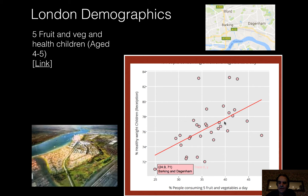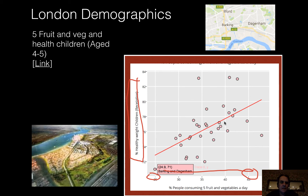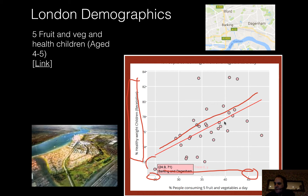If we look at fruit and vegetable consumption — with the fewest portions of five-a-day on one end and the most on the other — and then plot the healthy weight of kids as they enter primary school at around four or five years old, we again see a strong correlation between healthy eating and healthy weight. The more deprived areas have the weakest profile, up to the more affluent areas.